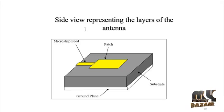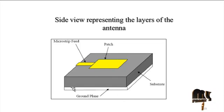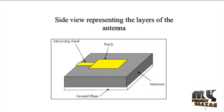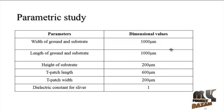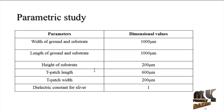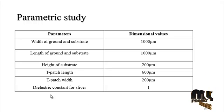This diagram represents the layers of the antenna. We use a top patch antenna, a bottom ground plane, and a middle layer which acts as the substrate. These are the 3 layers of the antenna. The parametric studies include: width of the ground and substrate at 1000 micrometers, length of the ground, height of the substrate, T-patch length, T-patch width, and the dielectric constant of the silver substrate.